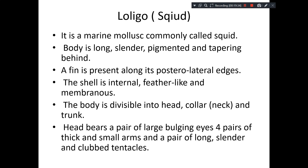In the head — the true head — there is a pair of large, bulging eyes. Then four pairs of thick and small arms, and a pair of long, slender, clubbed tentacles also.